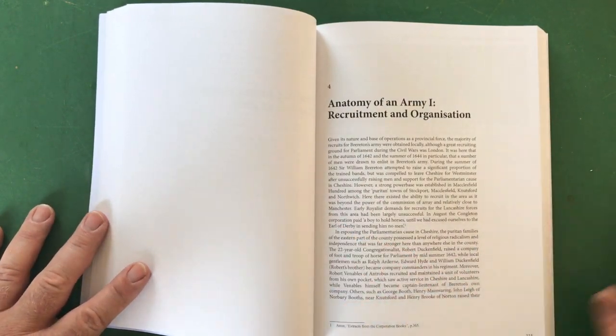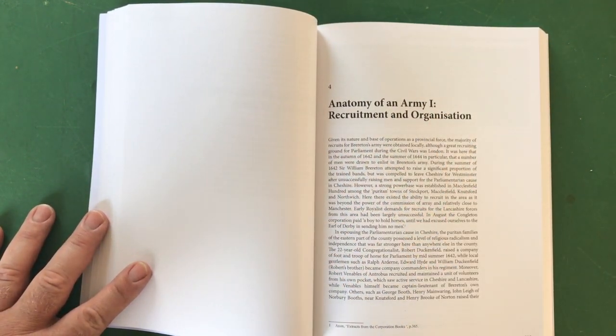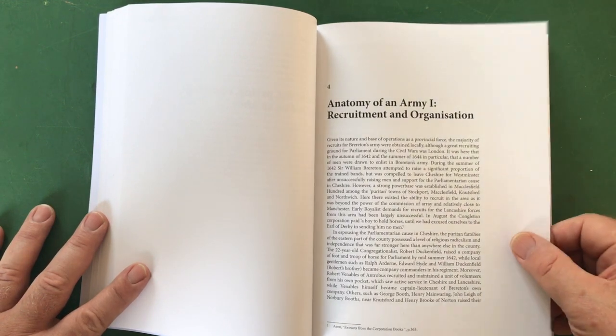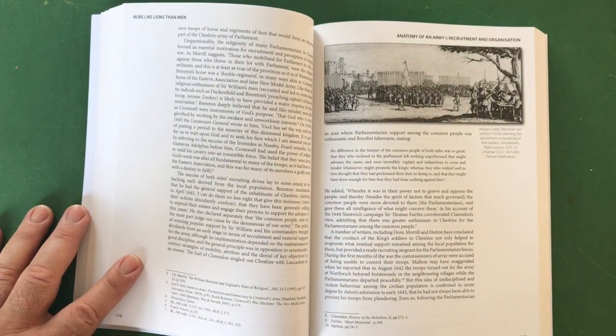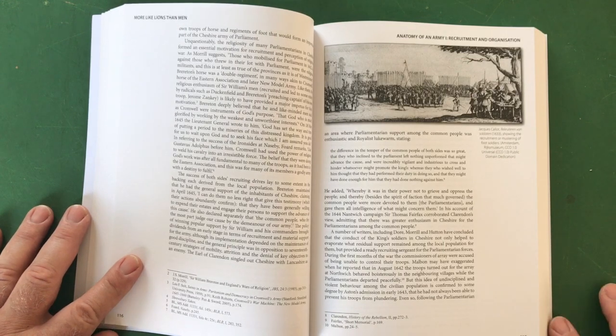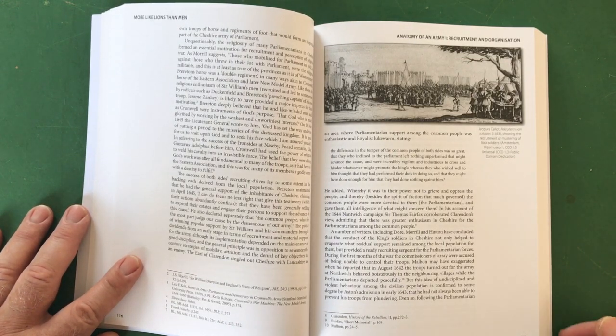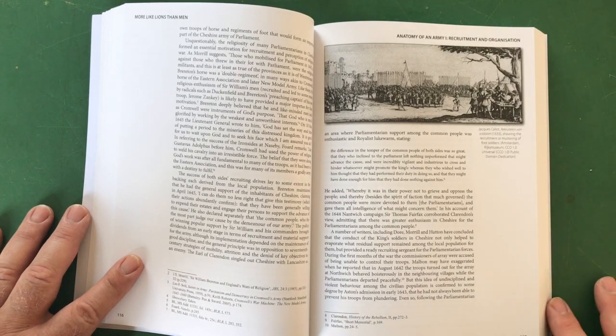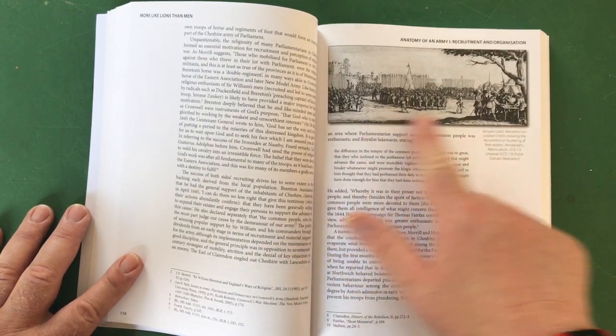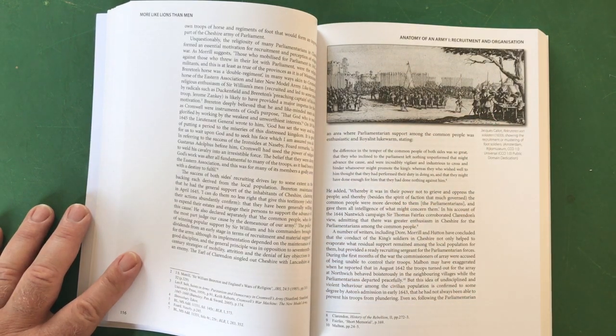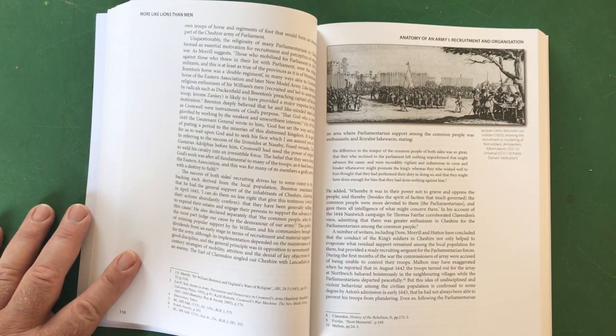This is brilliant stuff. Anatomy of an Army One: Recruitment and Organization. This is where there's some bits in this book where they get wonderfully specific. It makes for quite exciting reading. You start to feel quite involved even if you're only kind of flipping through.